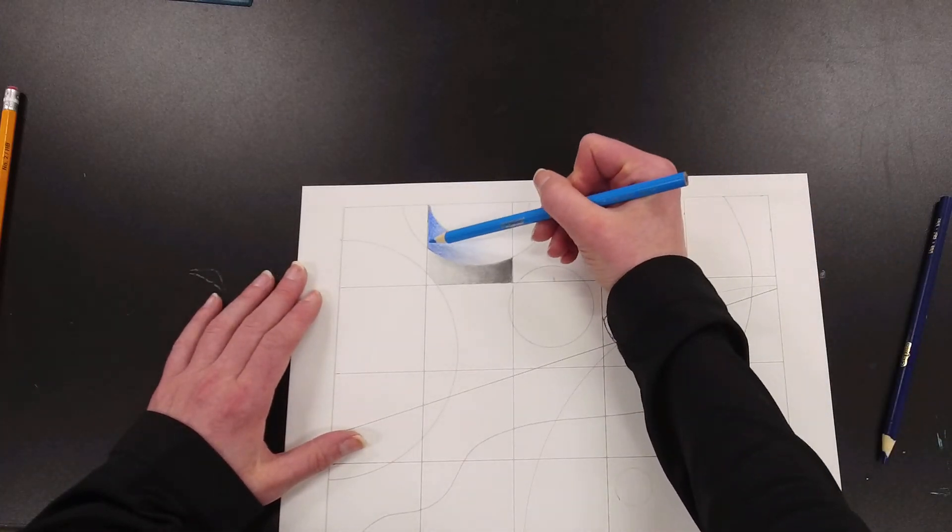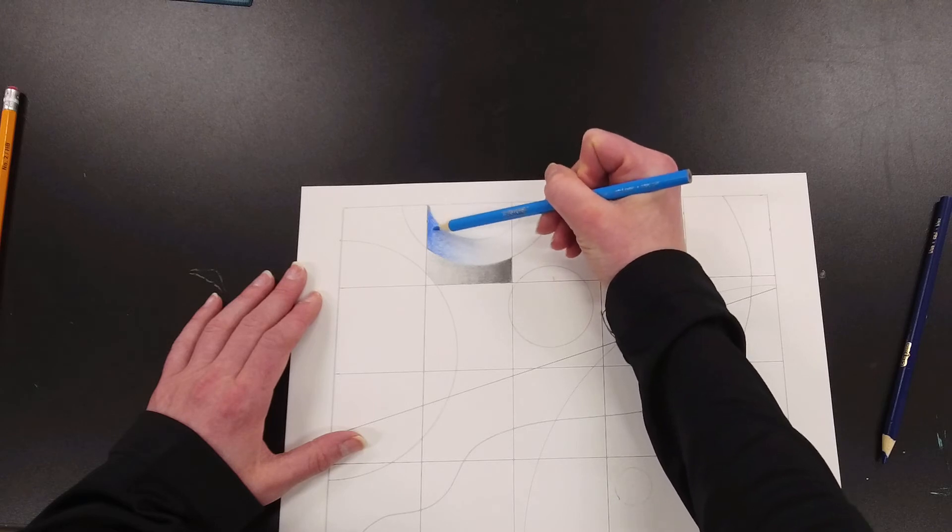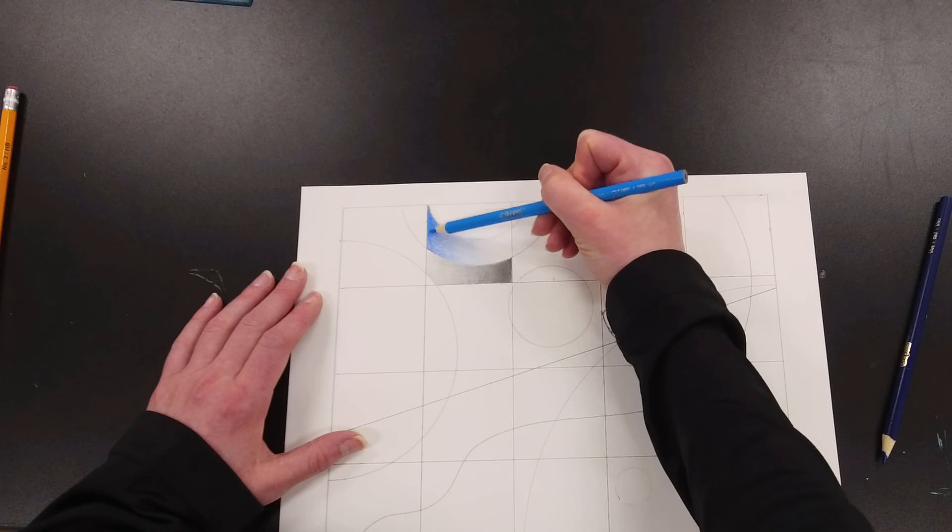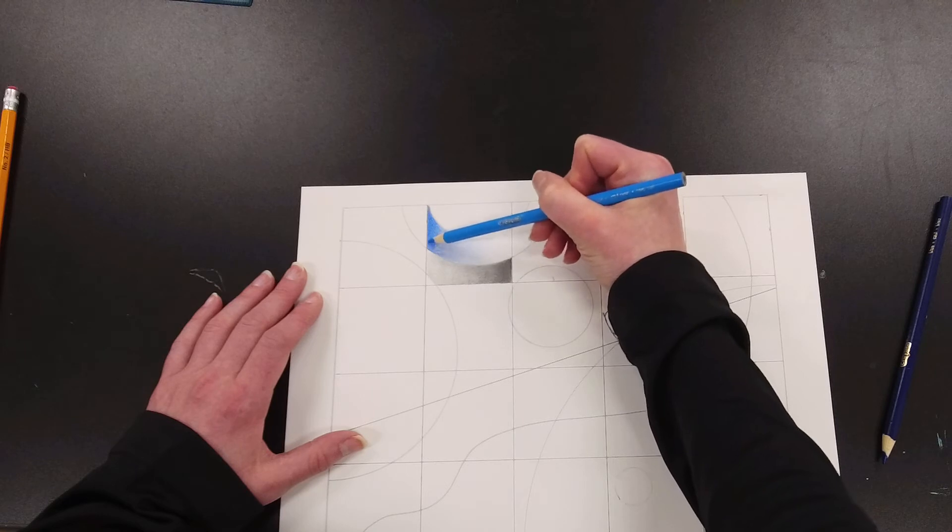For this example I'm going to go over it with my lighter blue, pressing down pretty hard now because it's essentially the third layer.